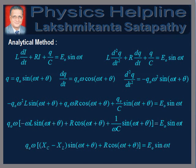Now we will discuss the analytical method. We start with the equation L·dI/dt + RI + q/C = E0 sin(ωt). Putting I = dq/dt and dI/dt = d²q/dt², we get L·d²q/dt² + R·dq/dt + q/C = E0 sin(ωt). This is similar to the equation of a forced oscillator. Let the solution be q = q0 sin(ωt + θ). Therefore, dq/dt = q0·ω·cos(ωt + θ), and d²q/dt² = −q0·ω²·sin(ωt + θ).